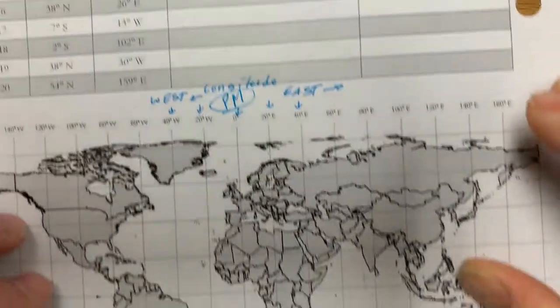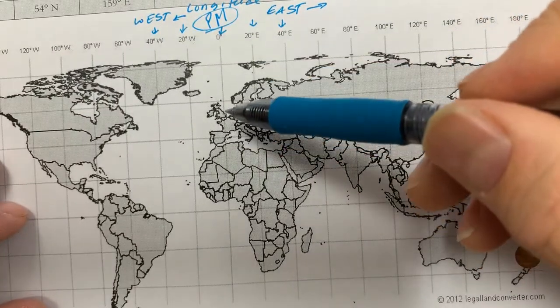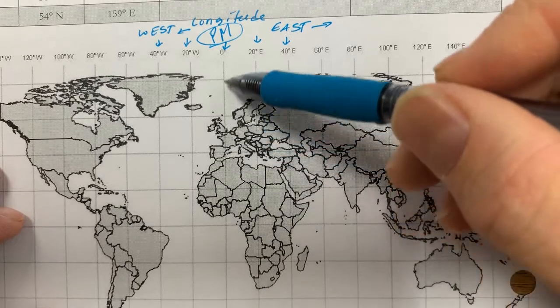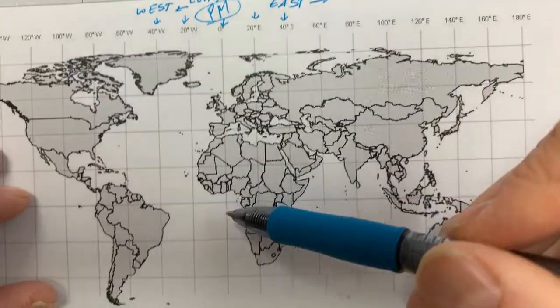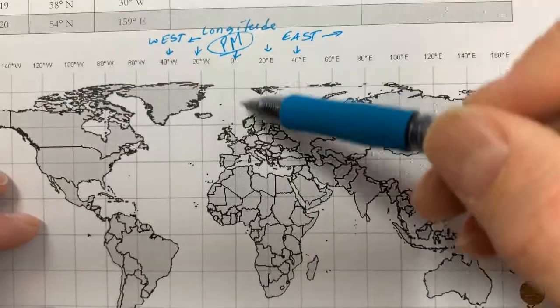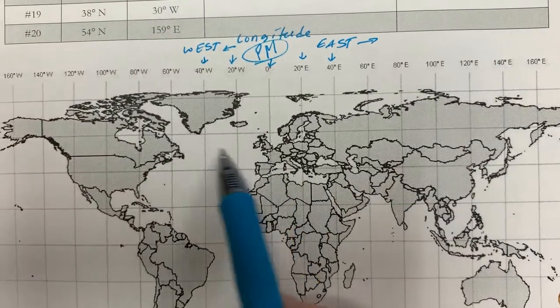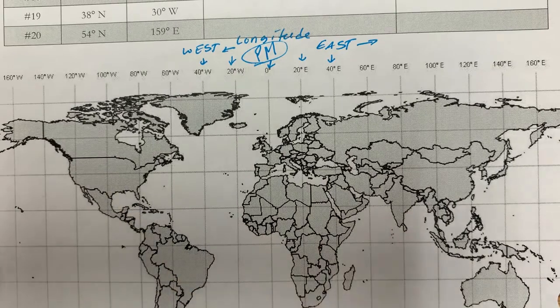Now the prime meridian runs through an observatory in Greenwich, England. That's where they put it, and they basically connected a line from the north pole down to the south pole, so that's the zero point. Anything east is east longitude towards China. Anything west towards the United States is west longitude.